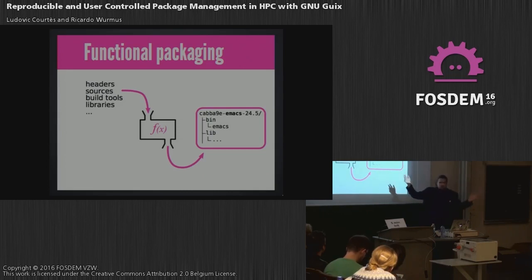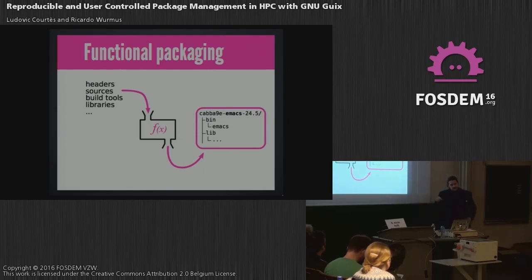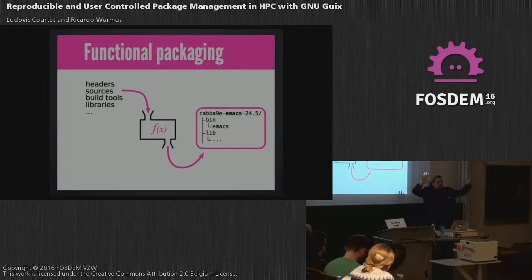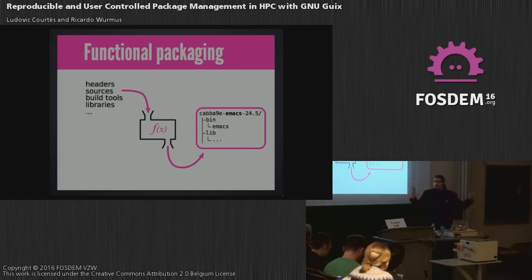In this case, we've got a function that's like configure, make, make install. It takes inputs — the header files, the source code, the build tools, libraries — and it produces a package, in this case Emacs. If you change any of the build tools, libraries, or whatever, that will be a different thing, even if it's the same version. If you substitute every package with a function like that, you recurse through the whole graph of package dependencies. Eventually you have the whole directed acyclic graph of your software environment. And since this is all free software, you can poke at each little bit of it and change whatever you want.